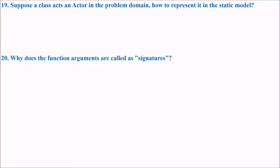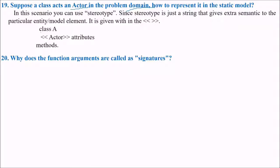Suppose a class acts as an actor in the problem domain. How to represent it in the static model? You can use the stereotype in this scenario. Since stereotype is just a string that gives extra semantic to the particular entity model element, it is given like this. Angle brackets on both the side. Class A then actor attribute matters.